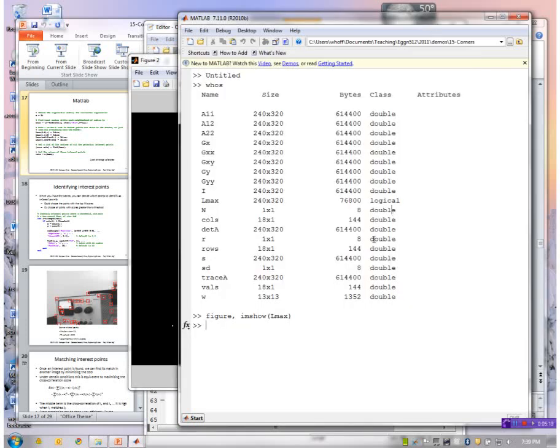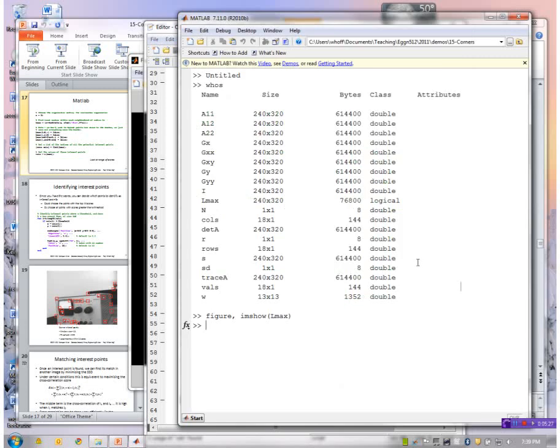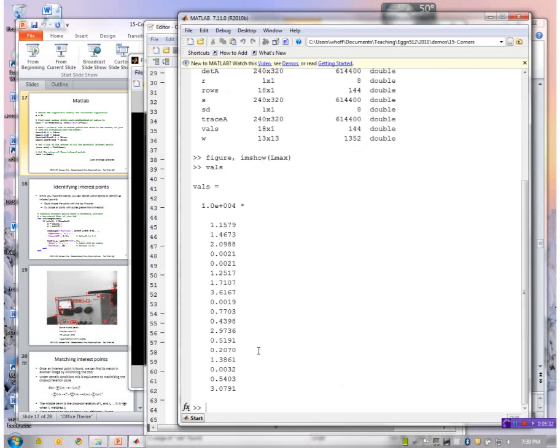So how many did I get? I've got my scores in this array called VALS. And VALS looks like I have 18 of them. And those are the values of the interest point scores at those peaks.